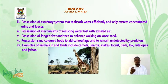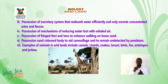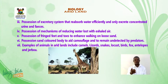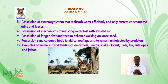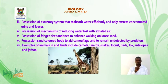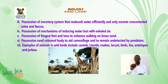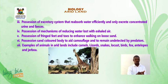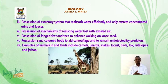Six, possession of sand-colored body to aid camouflage and to remain undetected by predators. Seven, examples of animals in arid lands include camels, lizards, snakes, locusts, birds, fox, antelopes, and jerboa. The diagram below shows examples of some animals in the arid lands.